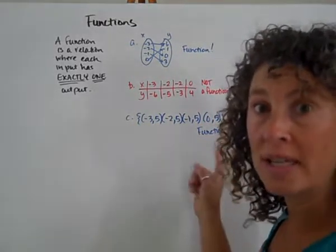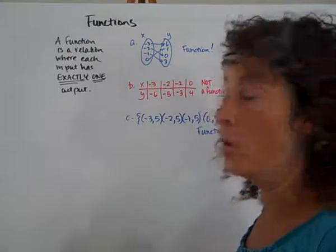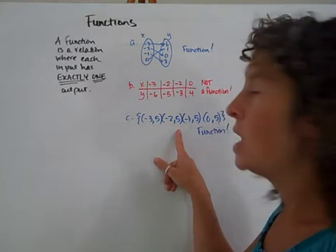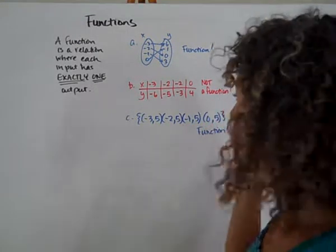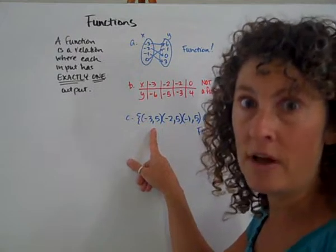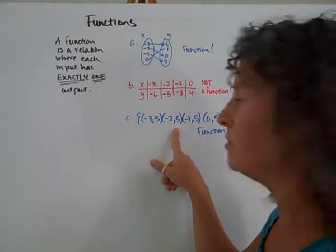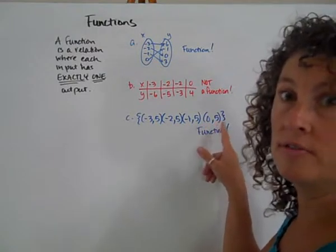Let's take a look at this last one, which looks a little weird, but let's think about it in the context of our phone. Negative 3 has an output of 5, negative 2 has an output of 5, negative 1 has an output of 5, and 0 has an output of 5. So if I think about my phone, if I dial negative 3, I get 5. If I dial negative 2, I'm going to get 5. If I dial negative 1, I'm going to get 5, and if I dial 0, I'm going to get 5.